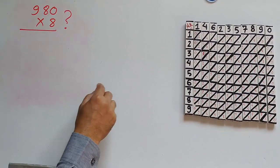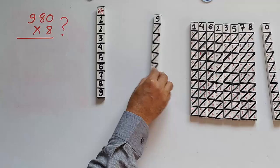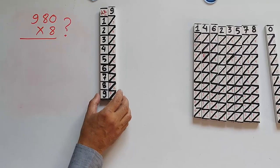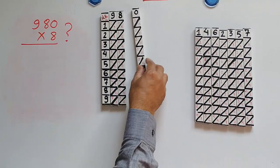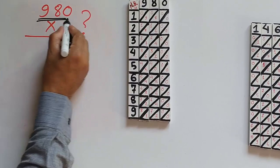Like before, we take the columns 9, 8, and 0. We have the numbers 9, 8, and 0 times 8 which is the 8's row.